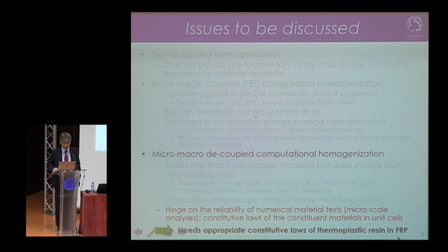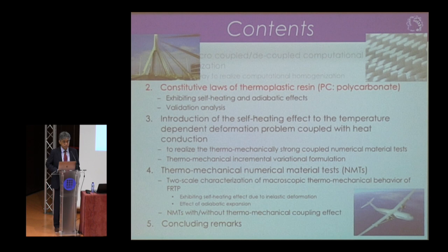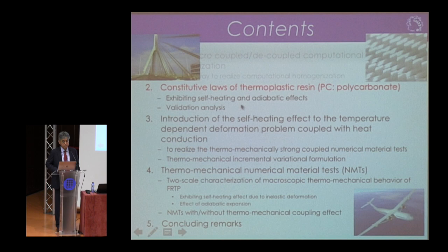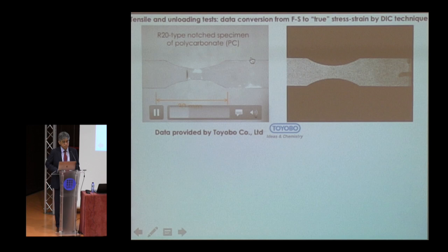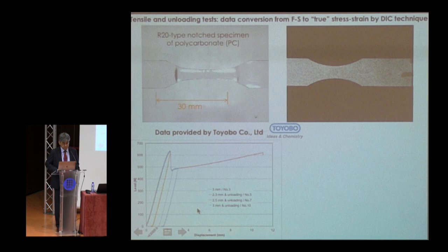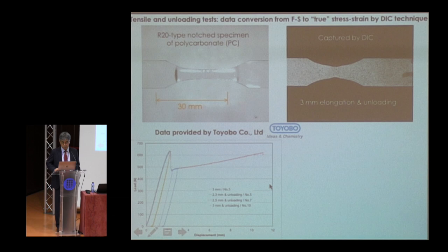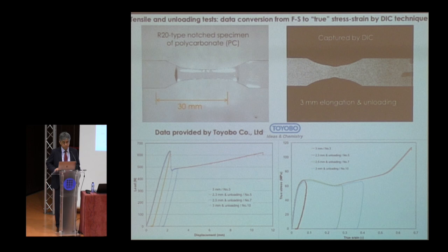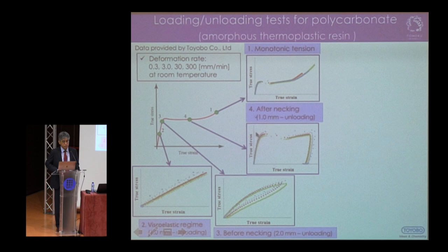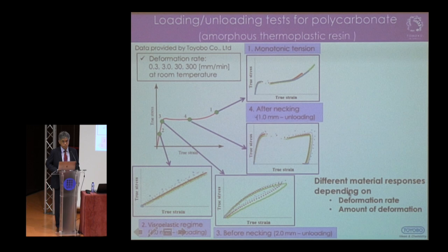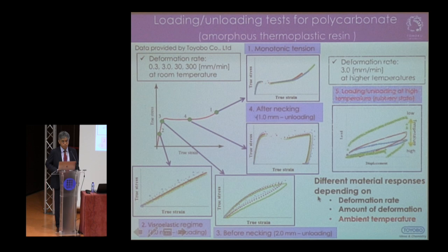The first step for the two-scale characterization of fiber-reinforced plastics is to develop a constitutive law of the thermoplastic resin. In this study, we are concerned with polycarbonate exhibiting self-heating and adiabatic effects. Let us look at the experimental results of tensile loading-unloading tests of polycarbonate specimens, giving stress-displacement curves at different deformation levels before unloading. Using digital image correlation, we can convert this data into relationships between true stresses and true strains. We also have different material responses depending on deformation rates, deformation amount before unloading, and ambient temperature.